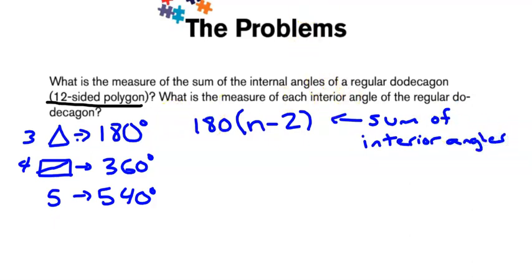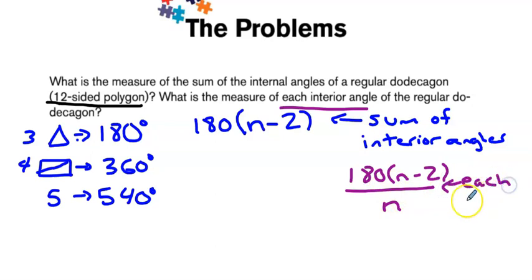If we then want to know the measure of each interior angle, we can take that formula and divide it by the number of sides. Once we have the total, we divide it by n, and that will get each interior angle of a regular shape, regular polygon.